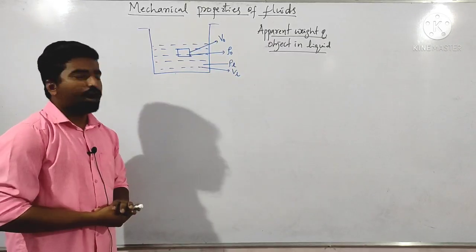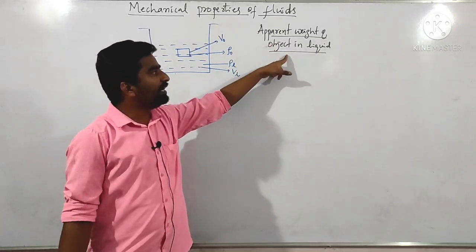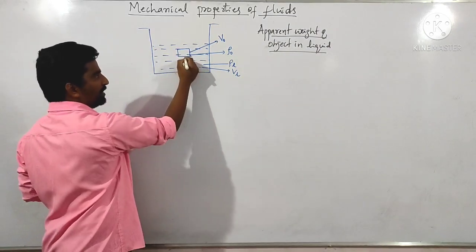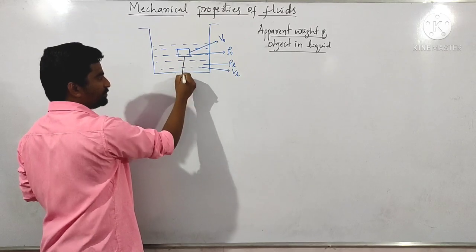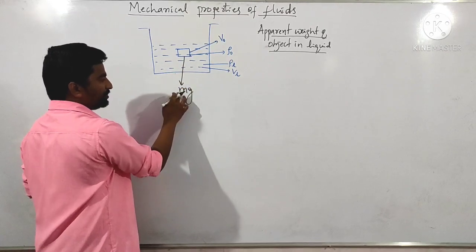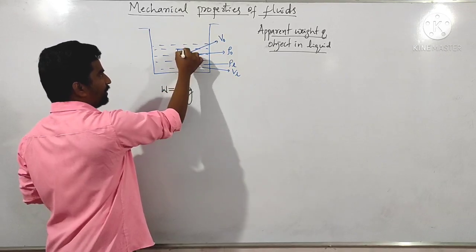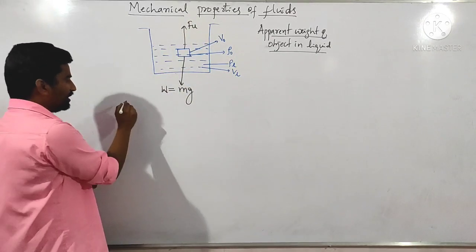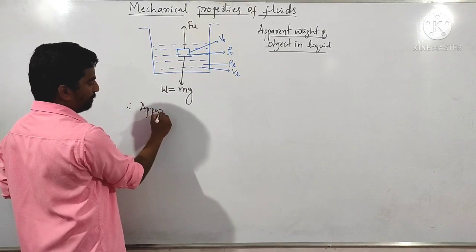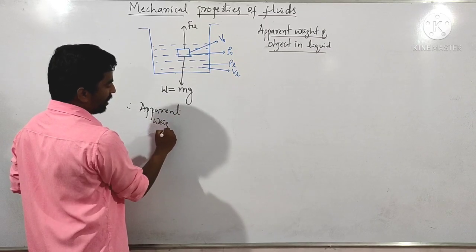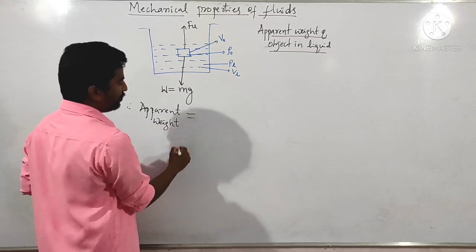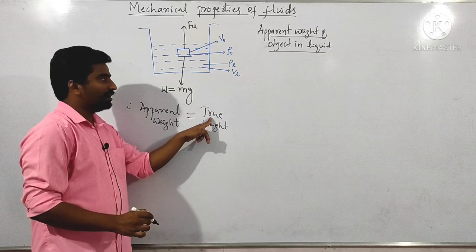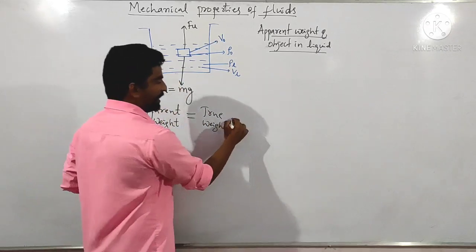One more thing here is how to calculate the apparent weight of the object in liquid. On this object, there are two forces acting: one is m×g, which is the actual weight, and the other is the upthrust, which equals the weight of the liquid displaced. So apparent weight equals true weight minus upthrust.